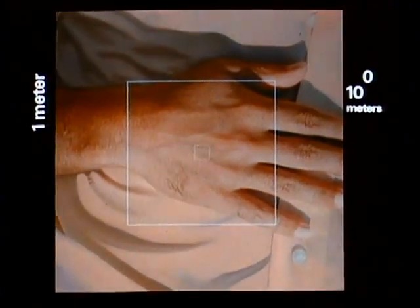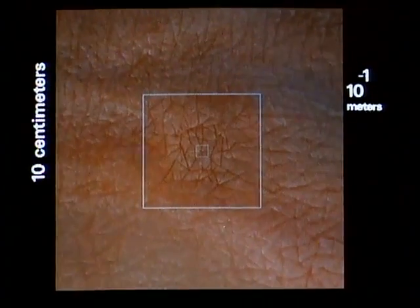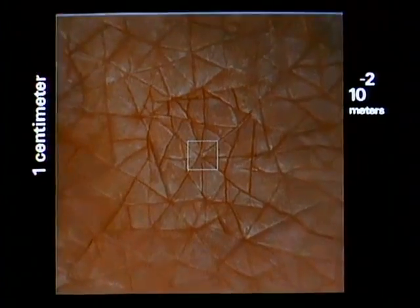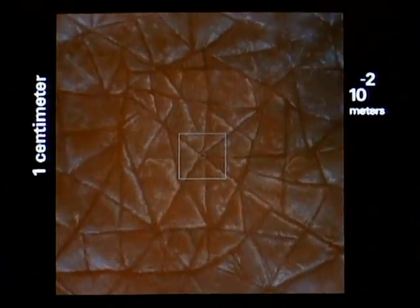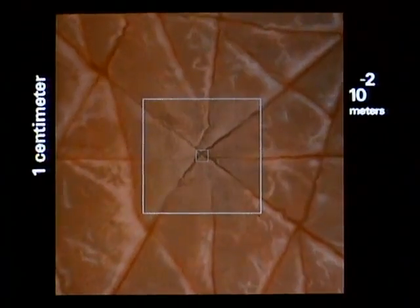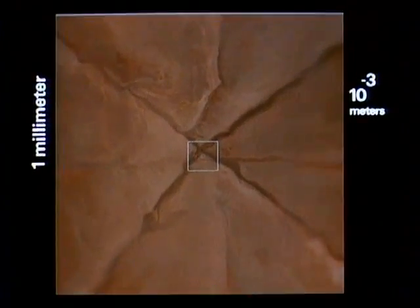Now we reduce the distance to our final destination by ninety percent every ten seconds, each step much smaller than the one before. At ten to the minus two, one one hundredth of a meter, one centimeter, we approach the surface of the hand. In a few seconds we'll be entering the skin.